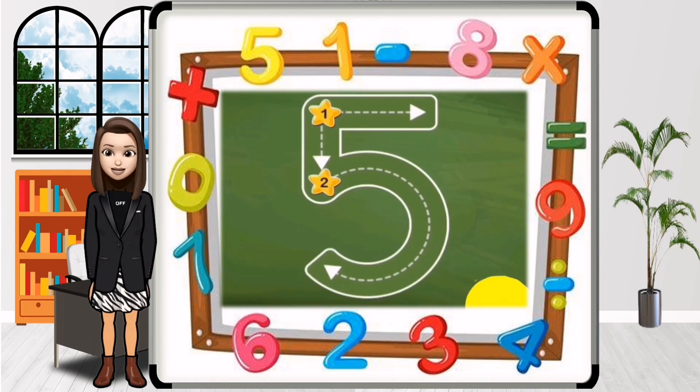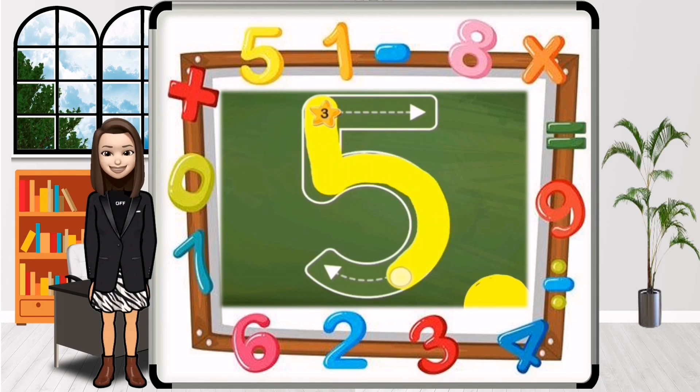This is the number 5. We can draw the number 5 by sleeping line, standing line and then draw a curve to the bottom.